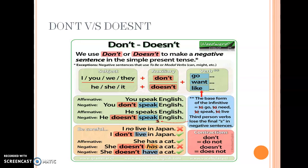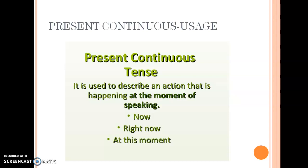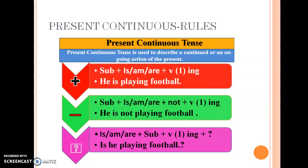Moving on to present continuous tense. Just like the name suggests — continuous — it is an action that is going on. Present continuous is used to talk about an action that is happening at the moment of speaking, meaning right now. It also covers actions happening around you but not exactly in front of you — for example, the fan is running, the birds are chirping, I am teaching, the pollution is increasing these days.